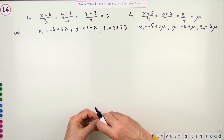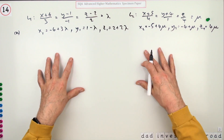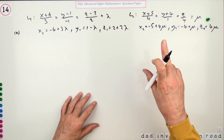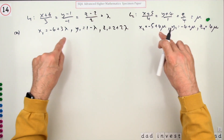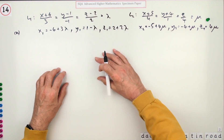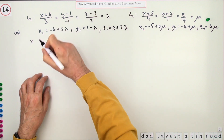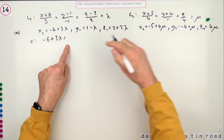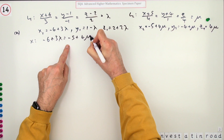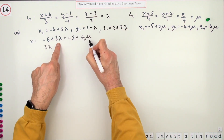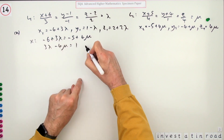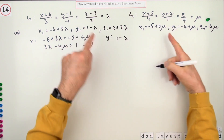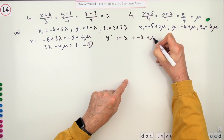Putting them into parametric form gives you the first mark. Intersect means that the coordinates should be the same for both equations at that point of intersection. Taking the x-coordinates: negative six plus three lambda should equal negative five plus four mu, so three lambda minus four mu equals one. That's one equation.